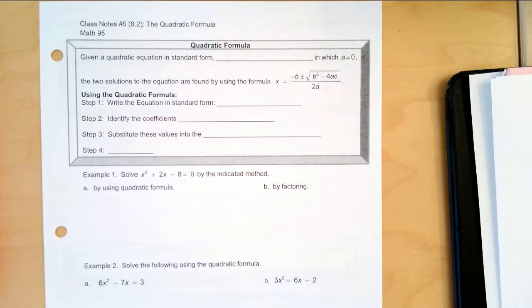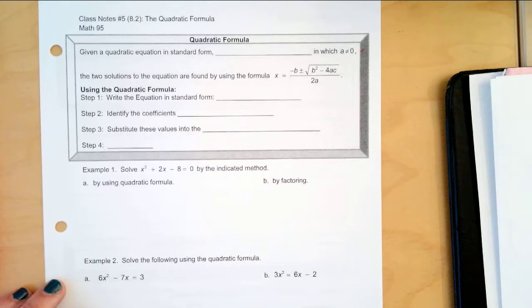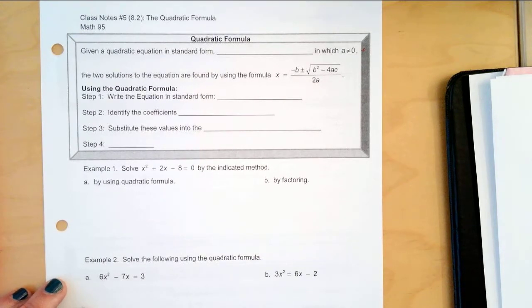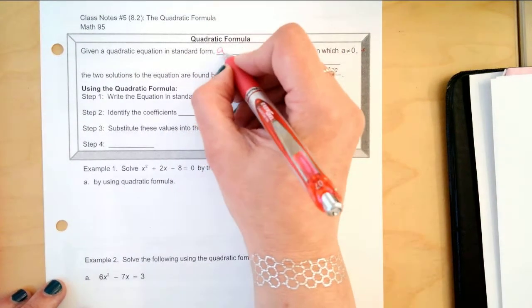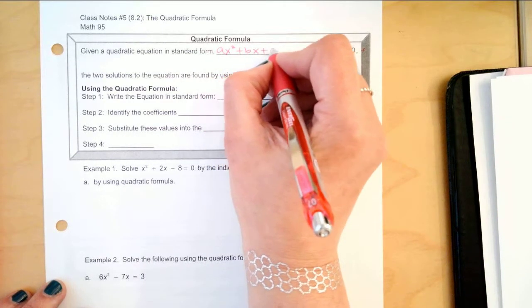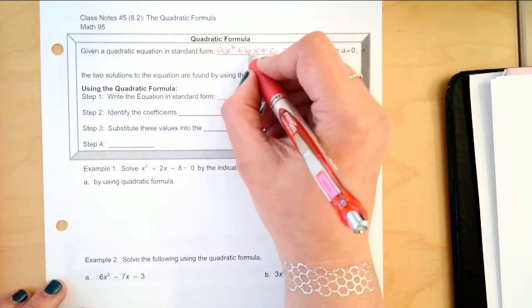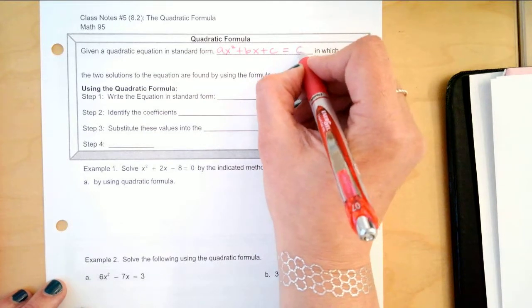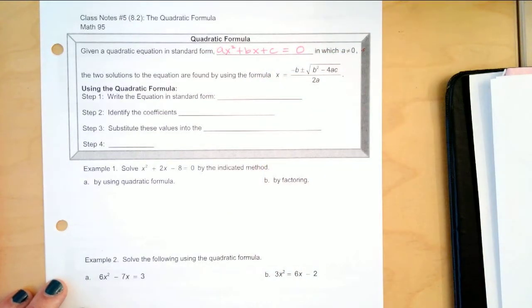Okay, in this lesson we're going to talk about the quadratic formula. So, given a quadratic equation in standard form, who can tell me what the quadratic equation in standard form is? Yes, ax squared plus bx plus c equals 0.